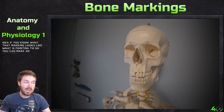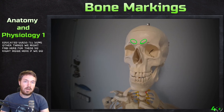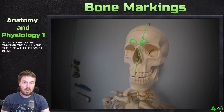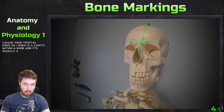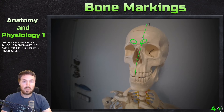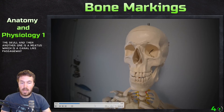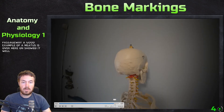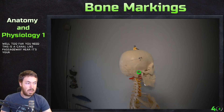Some other passageways: if we did a sagittal section through the skull, there'd be a little pocket inside called the frontal sinus. A sinus is a cavity within a bone, usually air-filled and lined with mucous membranes. They help lighten your skull and are found predominantly in the skull. Then there's a meatus, which is a canal-like passageway. A great example is the external acoustic meatus — your ear canal — right here on the skull.